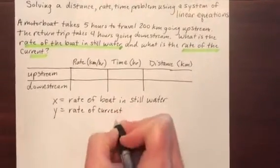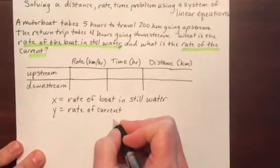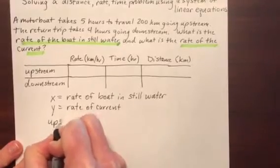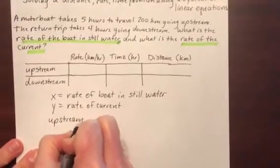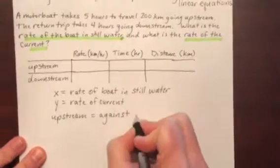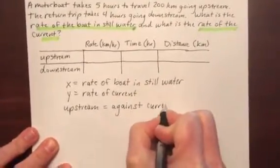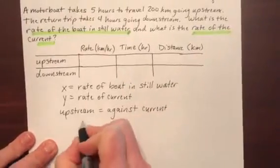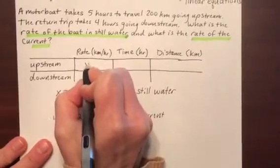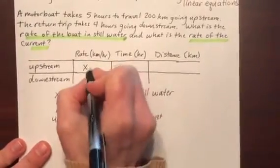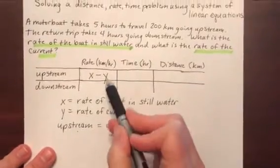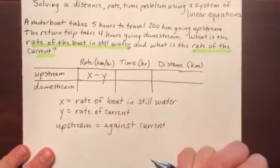If you think about it, as we're moving upstream, that means we're going against the current. So I'll write that down. Upstream equals against the current. That means it's pushing against you and slowing you down. And so basically the rate going upstream is going to be x, the rate of the boat, minus the rate of the current because it's decreasing by that. That's how much it's pushing against you.